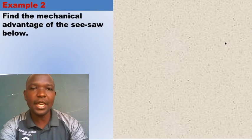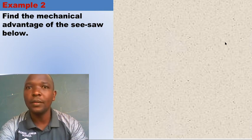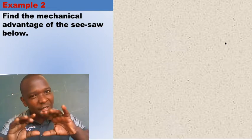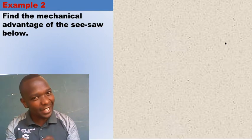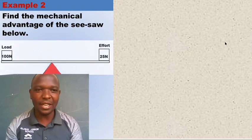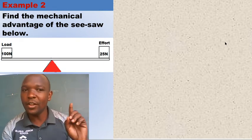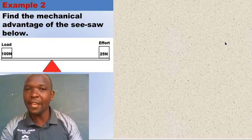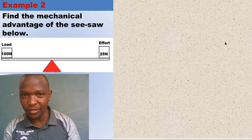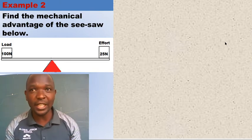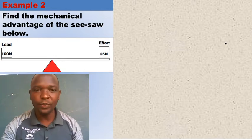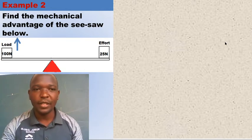Example two: Find the mechanical advantage of the see-saw below. Don't get confused with moments — we are using a see-saw to find the mechanical advantage. The load on the see-saw is 100 newtons, and the effort applied is 25 newtons. They want us to find the mechanical advantage, not the moments.